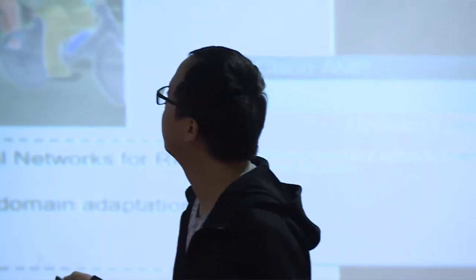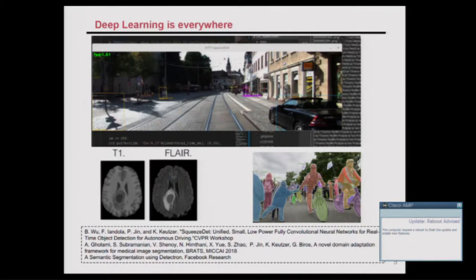Deep learning is everywhere nowadays. It can help you do object detection — put it on your car and it can help with autonomous driving. It can help detect whether you have cancer. And it can also do something called semantic segmentation, where you need to specify what parts belong to which person in a scene — a very tough task since some people have overlapping regions.